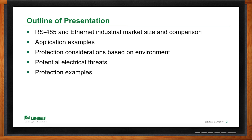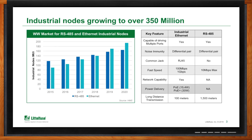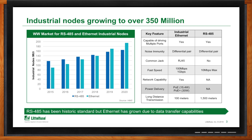So Craig, how many nodes are we talking about out there in the marketplace? Amazingly, for industrial nodes in 2020 the expectation is about 350 million. If you look at RS-485 versus Ethernet specifically, Ethernet is growing faster and actually surpassed RS-485 nodes in 2019.